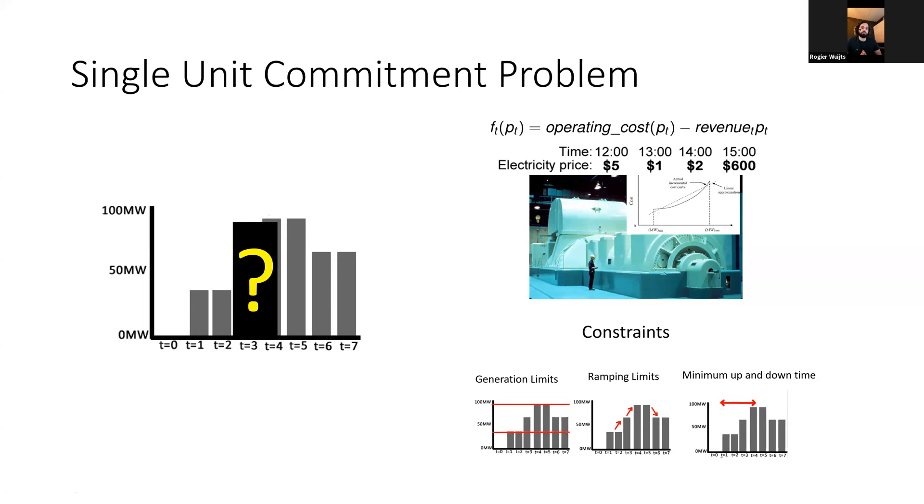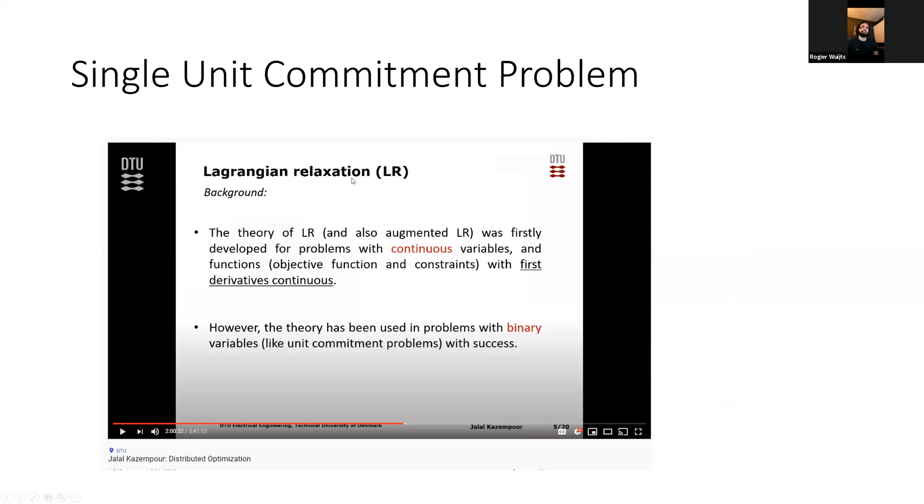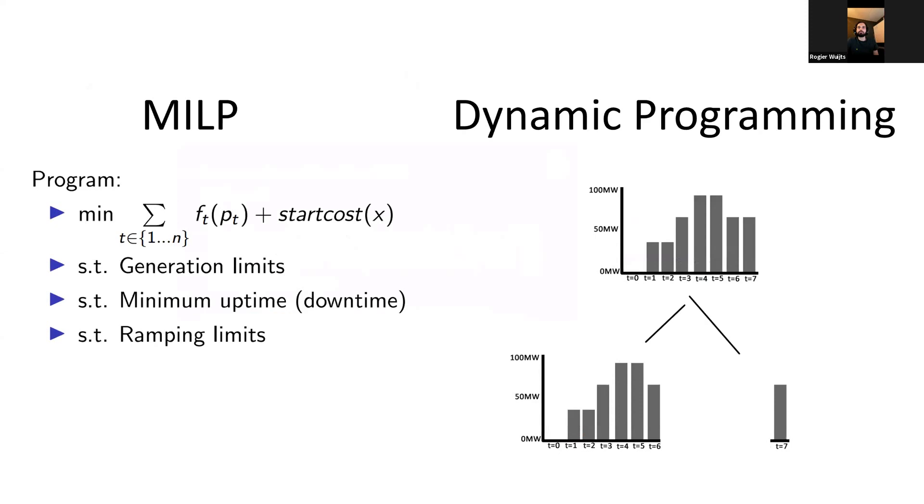Why would you want to solve this? This comes up as a sub problem if you do a Lagrangian relaxation of the normal unit commitment problem, or if you do column generation. Both are related and the electricity prices correspond to the dual variable, the shadow prices or the Lagrangian multipliers. Yesterday I saw a YouTube video with this quote: 'The theory of Lagrangian relaxation has been used in problems with binary variables like the unit commitment problems with success.' This is actually a quote from our chair.